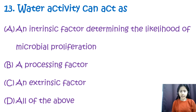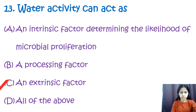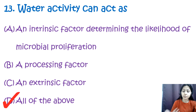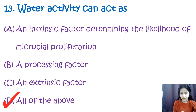Question number thirteen: water activity can act as option A: an intrinsic factor determining the likelihood of microbial proliferation, option B: a processing factor, option C: an extrinsic factor, and option D: all of the above. The correct answer is option D — all of the above. Water activity is a measure of the amount of free water available in food, expressed as a ratio of water vapor in the food substance to that of pure water at the same temperature and pressure.